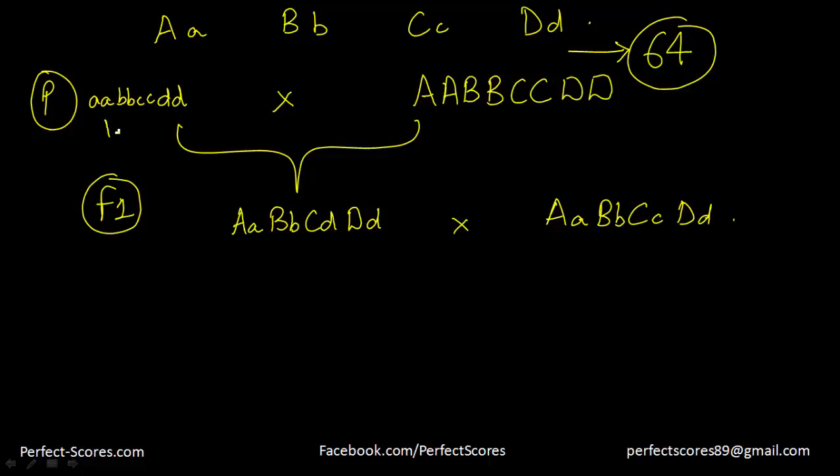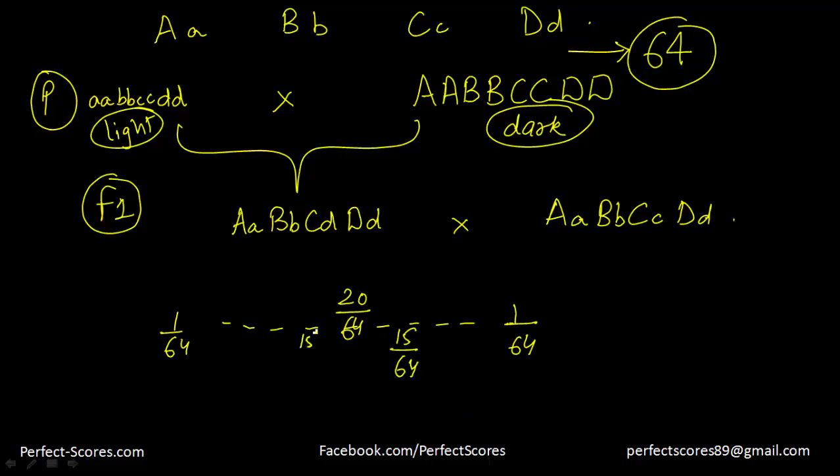So this is basically very, very light. That means no melanin is produced and this is very, very dark. But you still need to know the ratio, so basically going to get a range of different shades and the least one will be 1 by 64 and the darkest one is also going to be 1 out of 64. The middle one is going to be 20 out of 64 individuals and then you have 15 out of 64 on this side, then 15 individuals out of 64 on this side, and then finally 6 out of 64 on this side, 6 out of 64 on this side.